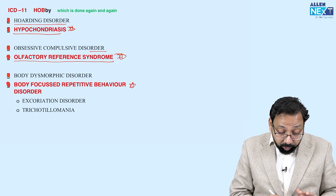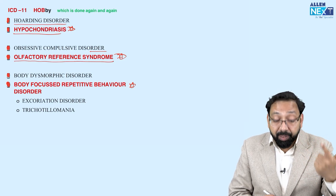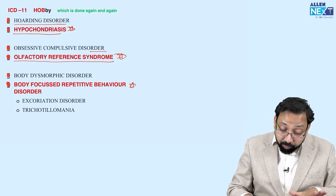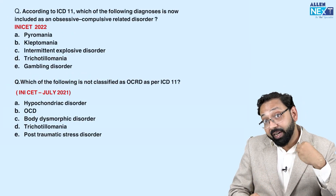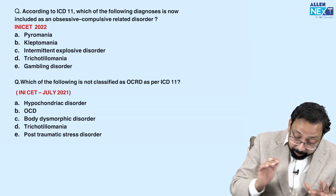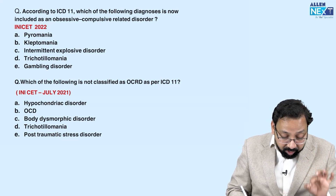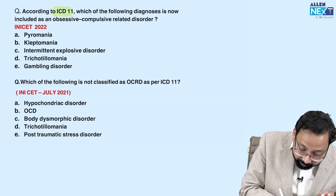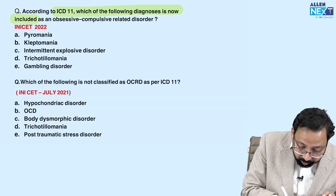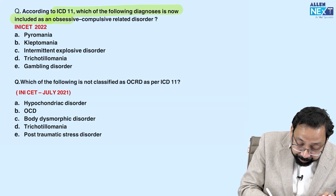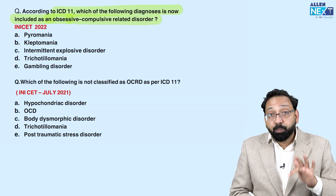Excoriation and trichotillomania are part of body-focused repetitive behavior disorder. This will become clearer when individual disorders are discussed. A recently asked exam question explains why ICD-11 is being stressed: 'Which of the following diagnosis is now included as obsessive compulsive and related disorder?'